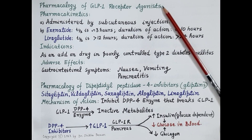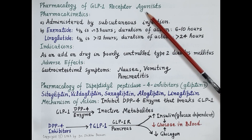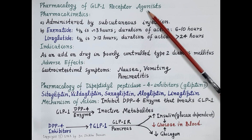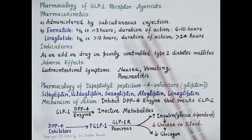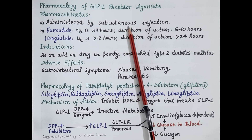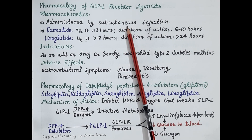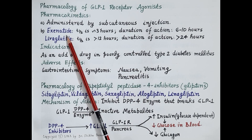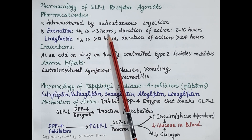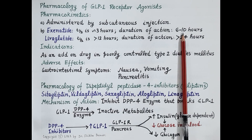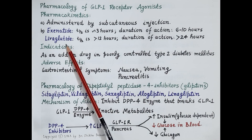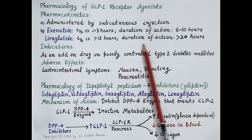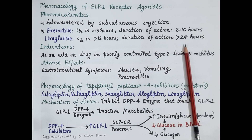Now a few important pharmacokinetic parameters. GLP-1 receptor agonists are hormones — these are peptides, meaning they are proteins, so these are destroyed if given orally. The major disadvantage is that they are administered by subcutaneous injection. After subcutaneous injection, exenatide has a half-life of around 3 hours and duration of action of 6 to 10 hours, whereas liraglutide has a half-life of more than 12 hours and duration of action of more than 24 hours.